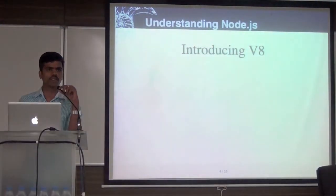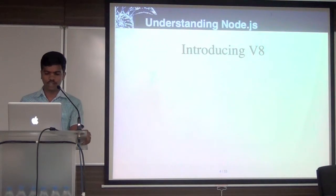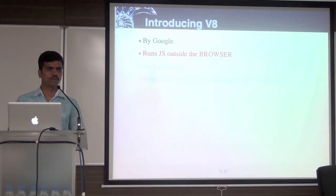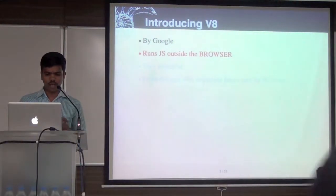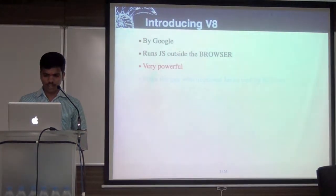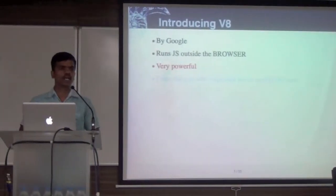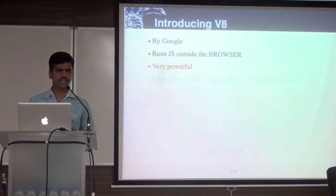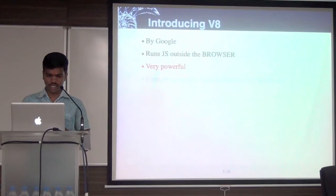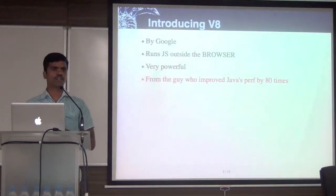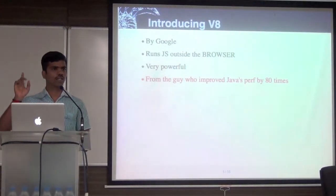Google came up with this thing called V8. It's basically used to run JavaScript outside the browser. Chrome uses it internally to run JavaScript, but you can also use it to run JavaScript outside the browser. It's very powerful. The smart thing from Google — they made V8 very powerful. This is from a guy who improved JavaScript performance significantly.